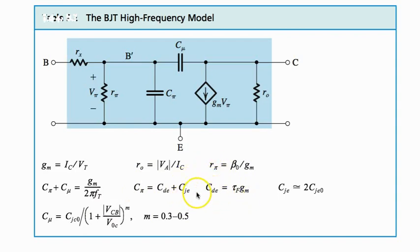This is junction capacitance of common emitter, depletion capacitance of common emitter. As we know, depletion capacitance is in reverse bias region and junction capacitance is in forward bias.